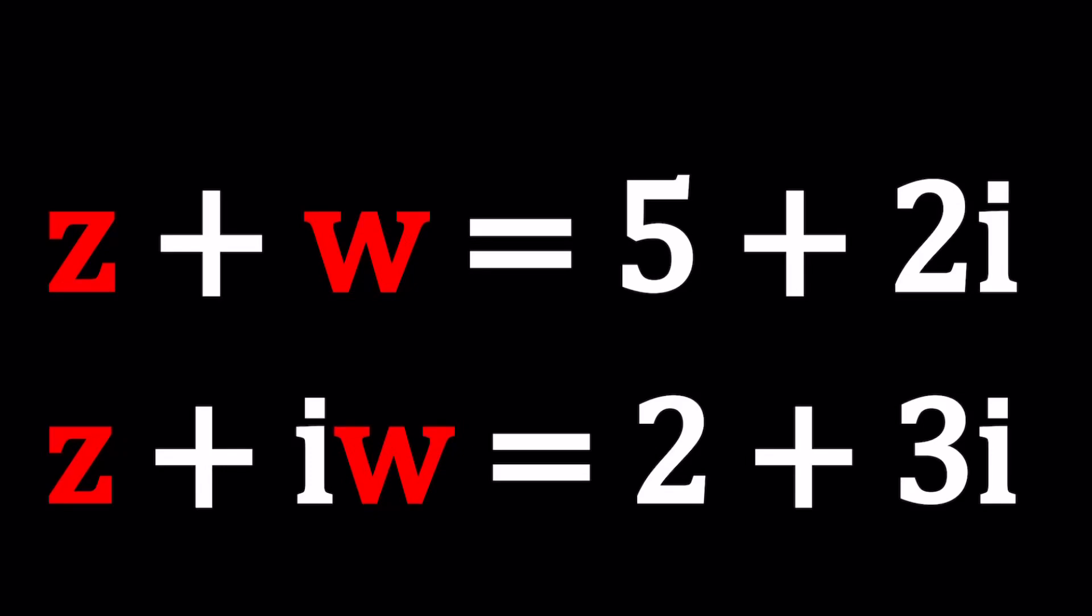Hello everyone, welcome to a plus bi. This channel is all about complex numbers and in this video we're going to be solving a system of equations. We have z plus w equals 5 plus 2i and z plus iw equals 2 plus 3i, and we're going to be solving for z and w. I'll be presenting at least two methods and let's see how this goes.